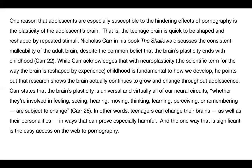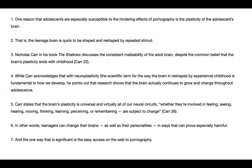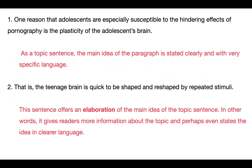So that's one paragraph out of a paper that uses some research from this book — seven sentences. What I want to do now is actually break it down. There are seven sentences, each one is numbered, and I'm going to talk about each sentence individually. So let's start with the first one. 'One reason adolescents are especially susceptible to the hindering effects of pornography is the plasticity of the adolescent's brain.' This is what's called the topic sentence. The topic sentence is the main idea of the paragraph, and it's stated clearly and with very specific language. Notice it's not a question, it's not a quote — it's the writer's own idea, making it very clear. This is what the entire paragraph is going to be about. Every paragraph should have a topic sentence.